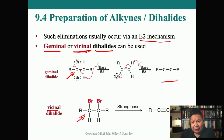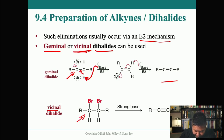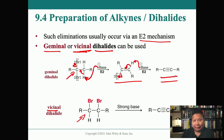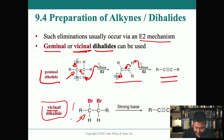There are two kinds of dihalides: geminal dihalides, where both leaving groups are on the same carbon, and vicinal dihalides, where they're on adjacent carbons. The proposed mechanism is an E2 mechanism: the base pulls the proton off, the bond forms the pi bond, and the first bromine leaves giving an alkene. Then with more strong base, another E2 occurs, forming the second pi bond as the second bromine leaves, giving you the alkyne.